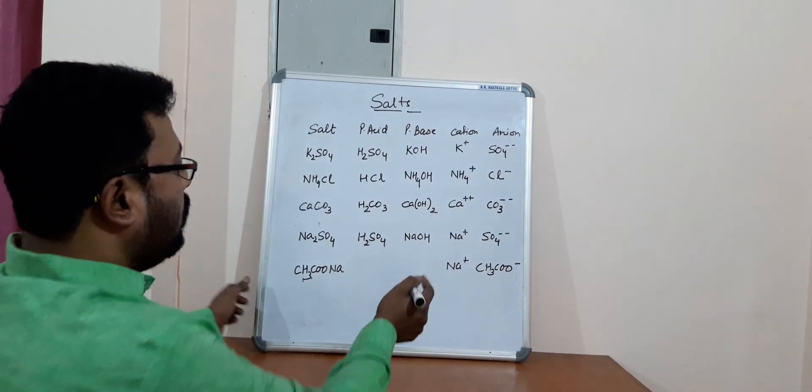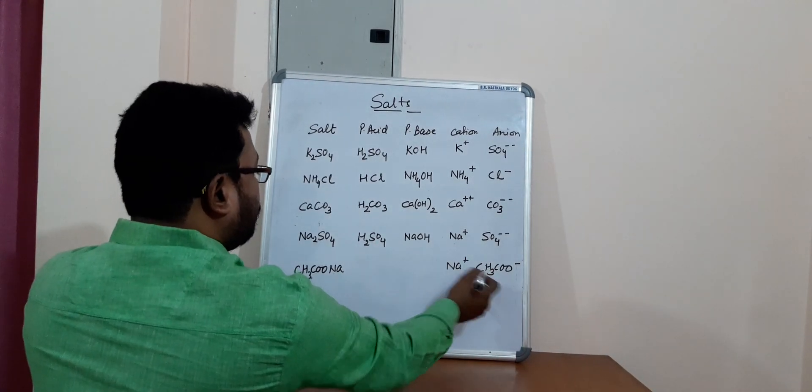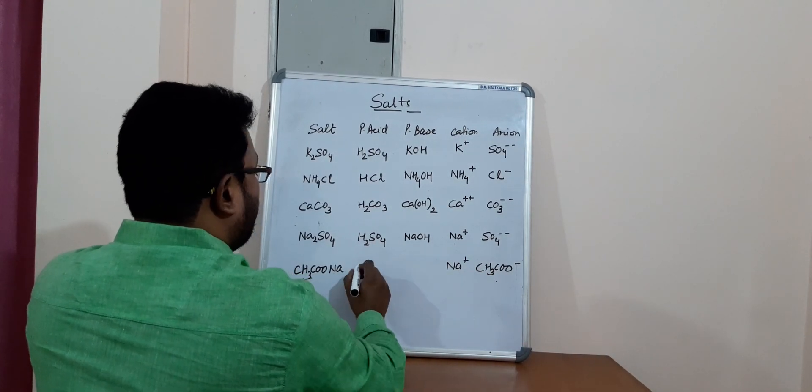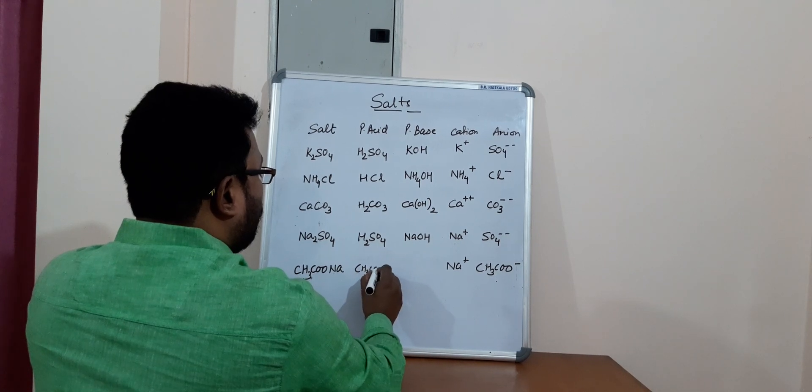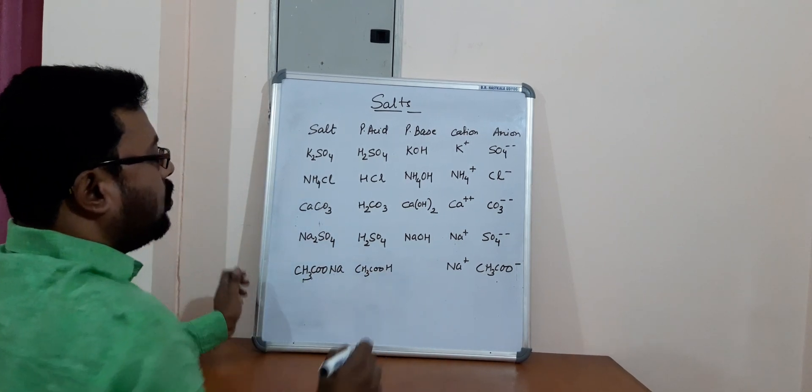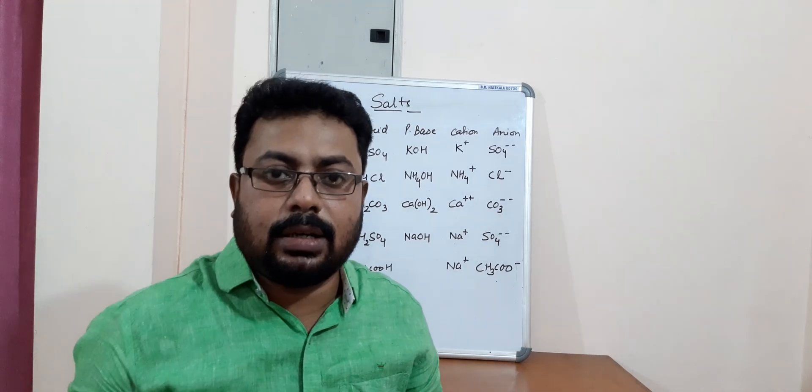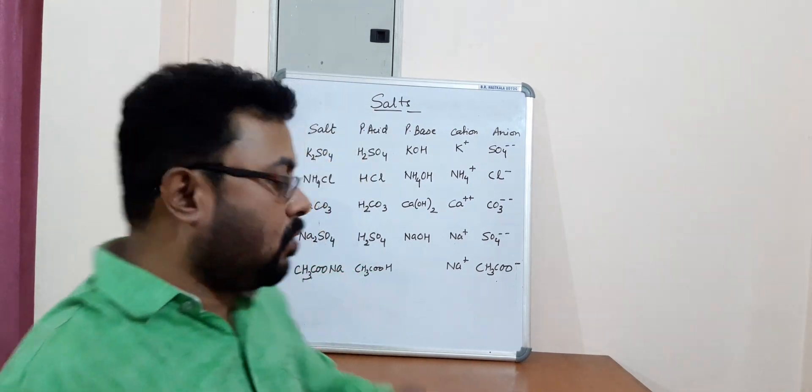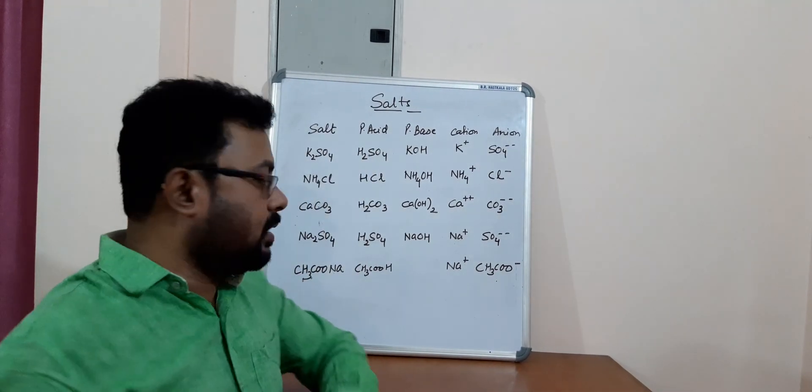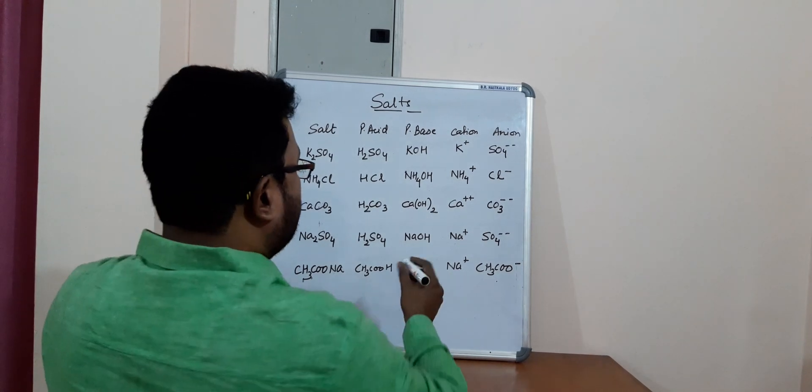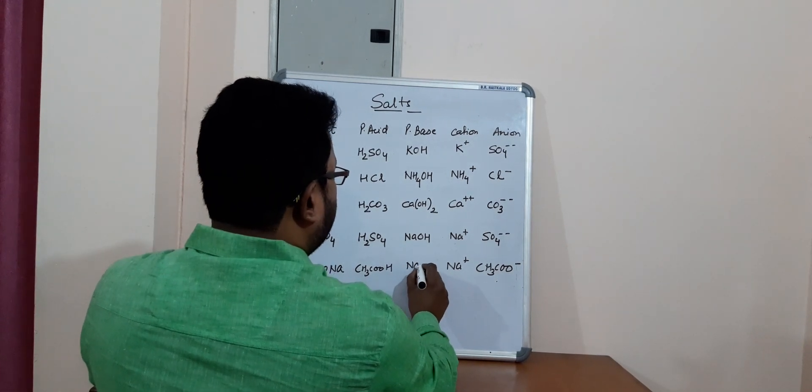Now, so here this has come from an acid. So CH3COOH. This is the acid, which is also known as ethanoic acid or acetic acid. This one is the base.